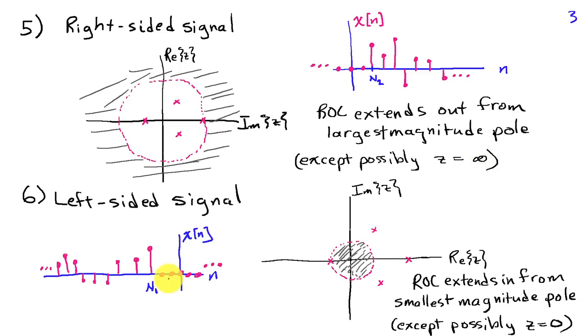On the other hand, if we have a left-sided signal, one that is zero for all values of n greater than some N1, then we know that the ROC lies inside of a circle whose radius is equal to the magnitude of the smallest pole of the system, with the exception that we might need to exclude Z equals zero. We've seen both of these properties play out in our examples. When we had a geometric sequence that extended to the left or in the non-causal direction, we had ROC inside of a circle.